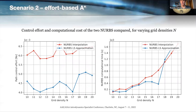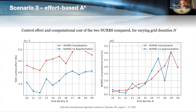For scenario two, the least-square approximating NURBS consistently outperforms the other curve in control effort. Surprisingly, it does not require longer computational time in this case, which came as a surprise. For scenario three, similar considerations apply regarding control effort, and it is not possible to decide a clear winner regarding computational time, as the two curves compare similarly.